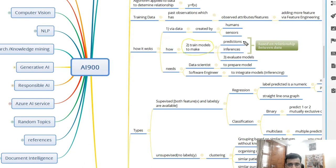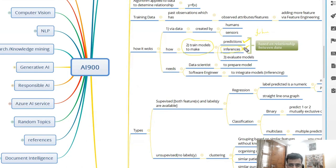There are two kinds of output a model can give: one is prediction, one is inference. Prediction is when you make something for the future — what can happen. In English, prediction is mostly for the future, while inference is like you have the data, you have both input and output, and you are making the inference out of it. This distinction sometimes comes up in exam questions.